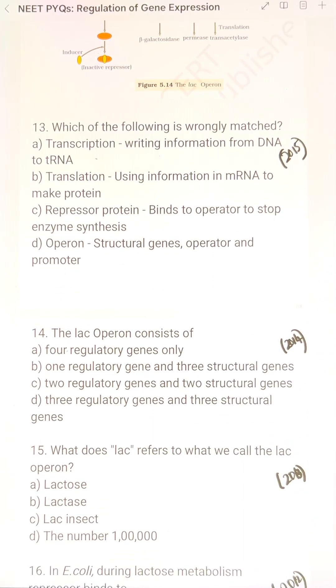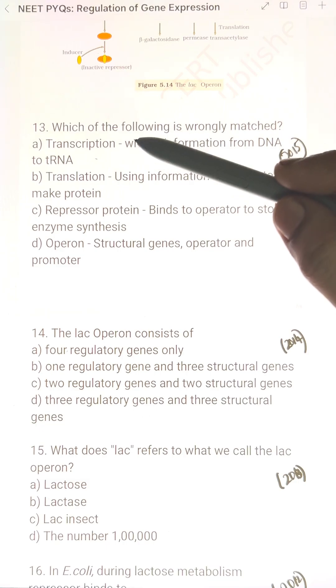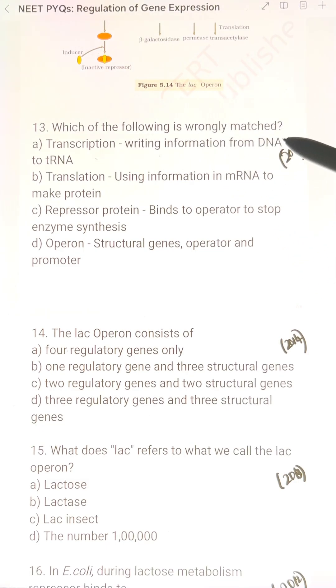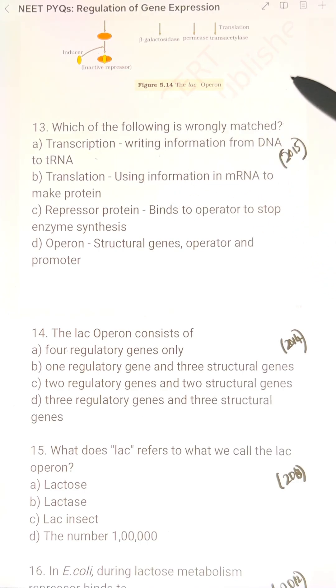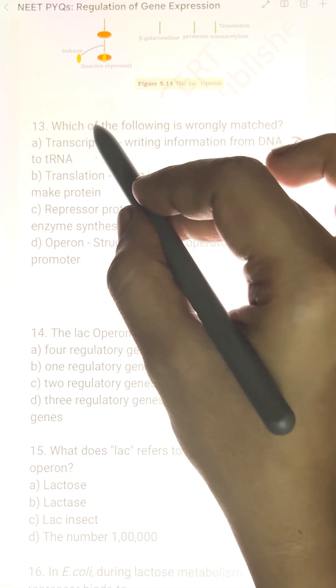Next question is which of the following is wrongly matched? The first option is transcription writing information from DNA to transfer RNA. This is wrong because transcription is DNA to messenger RNA copy. So this is the wrong statement.